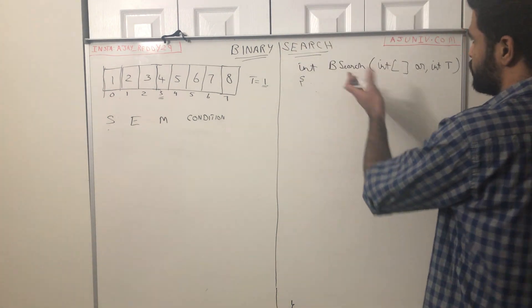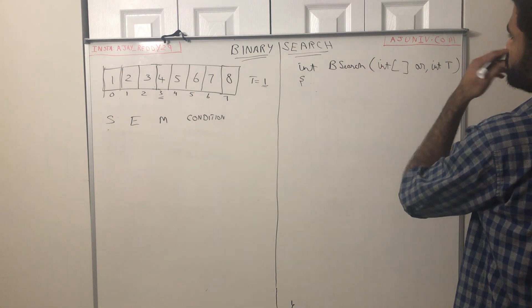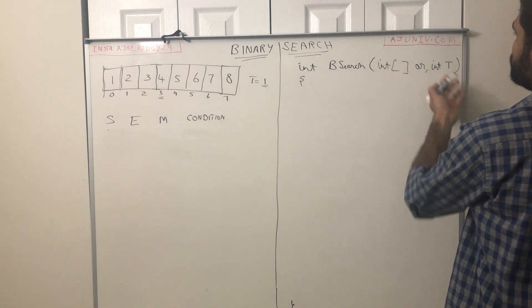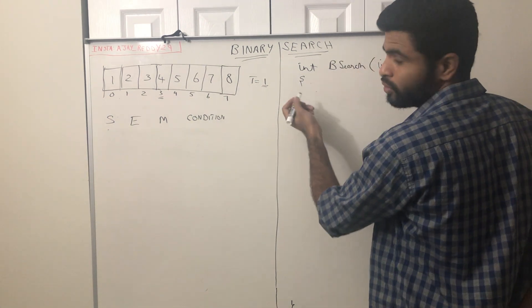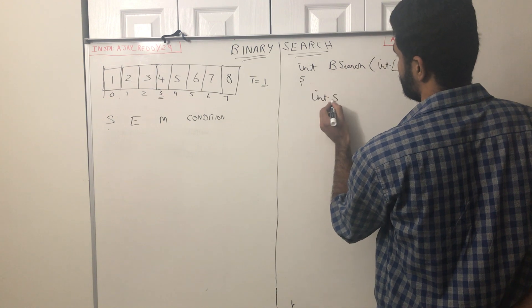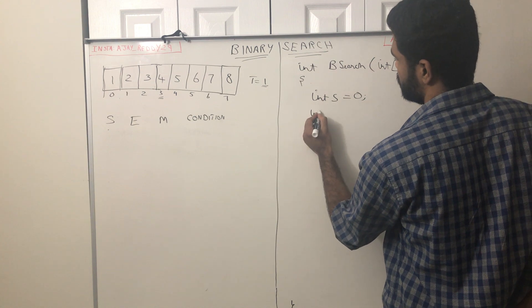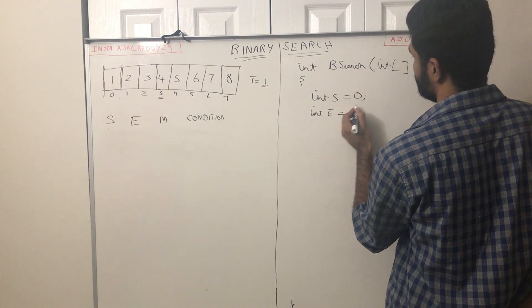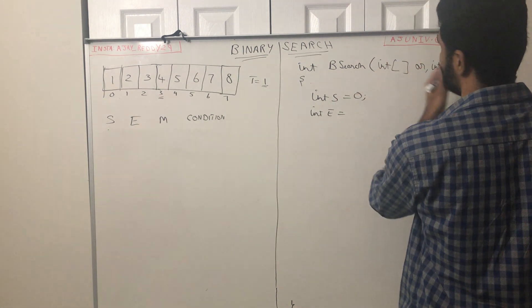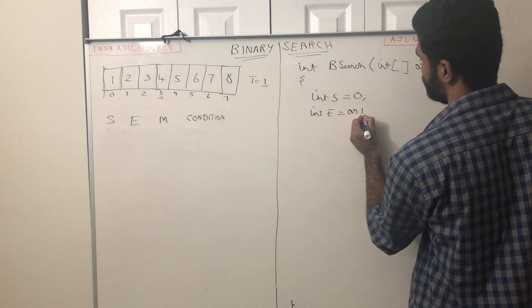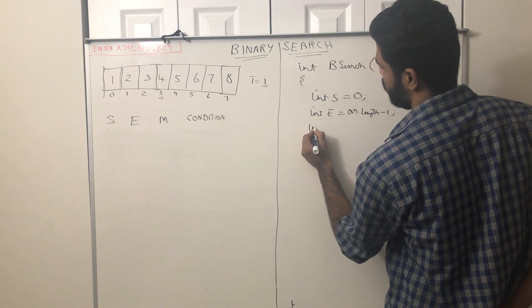I'll be using the same prototype discussed in the previous video, which is a binary search function taking an array of integers and a target entity. In this solution I want to declare: int startIndex, int endIndex. startIndex equals 0, which is the starting element of the array, and endIndex equals array.length minus 1, the last element. Now I want to use a while loop.